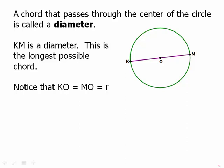Notice that a diameter is made up of two radii. K-O is a radius and M-O is a radius. So we can say diameter equals 2R.